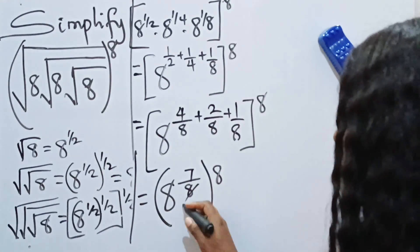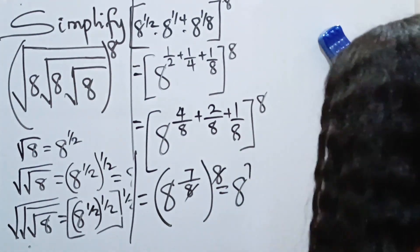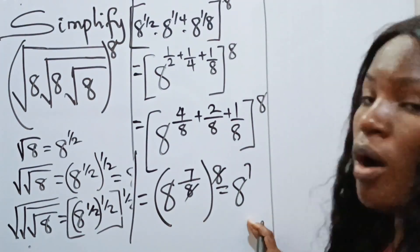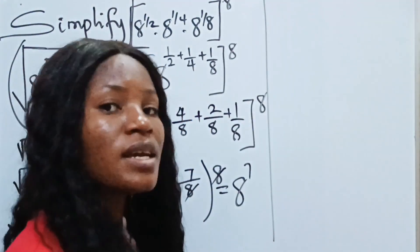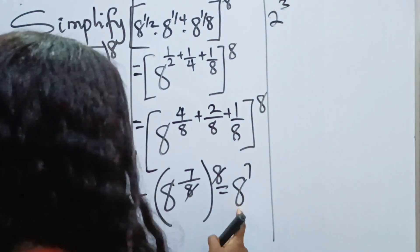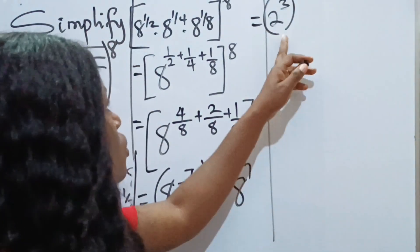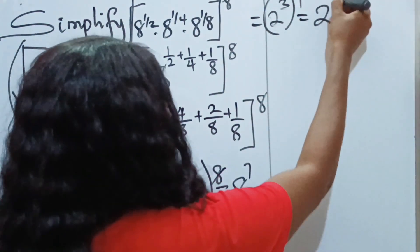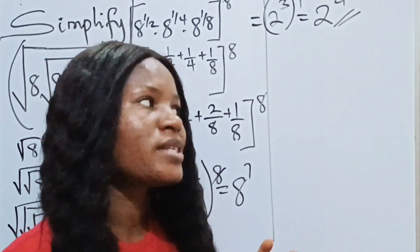We multiply the exponents: seven eighths times 8. The 8s cancel, giving us 8 to the power of 7. Now, 8 to the power of 7 is the same as 2 to the power of 3, raised to the power of 7, which equals 2 to the power of 21. So this is our answer using the first method.